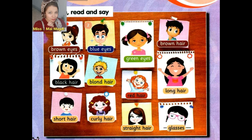Number two: Blue eyes. What is the meaning of blue eyes? Blue eyes — يعني عيون زرأة. Again, blue eyes. Okay, number three: Green eyes. Repeat after me — green eyes. Raise your voice: green eyes. Excellent! What is the meaning of green eyes? يعني عيون خضرأ.